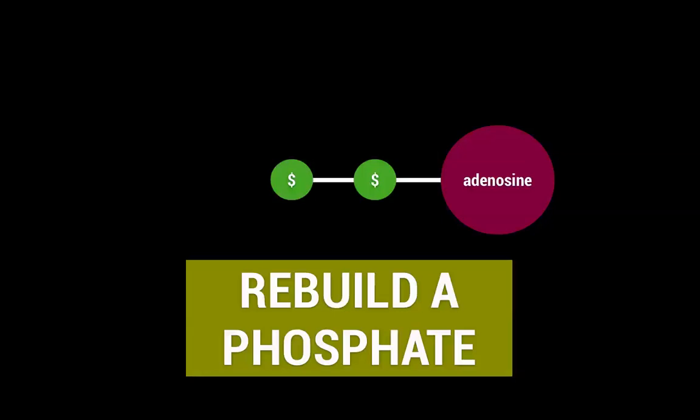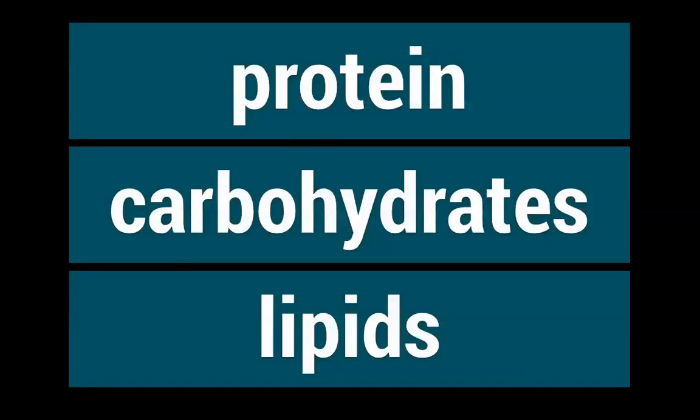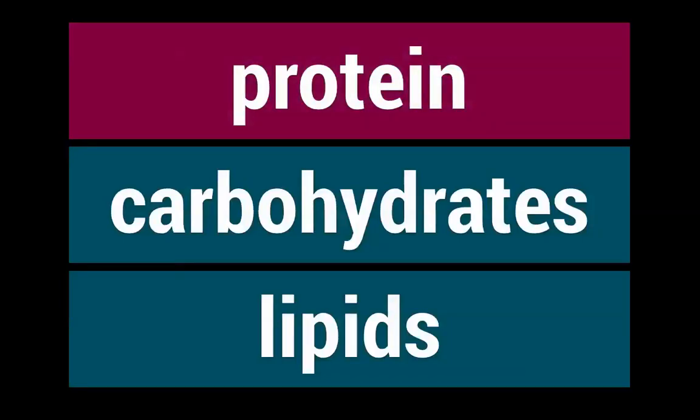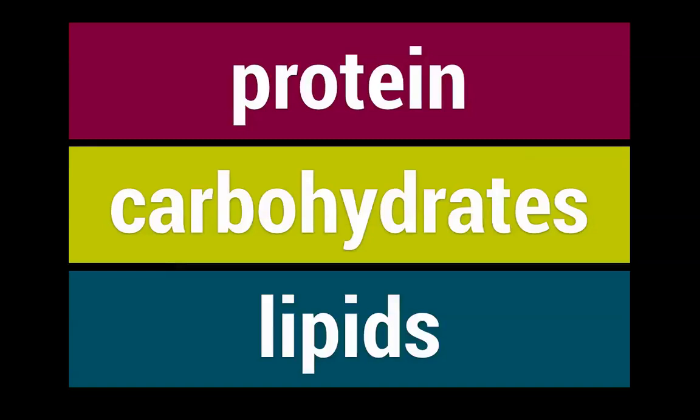In order to get that energy back, you need to rebuild that phosphate. And the only way to do that is by eating things like proteins, carbohydrates, and lipids to help rebuild the ATP.